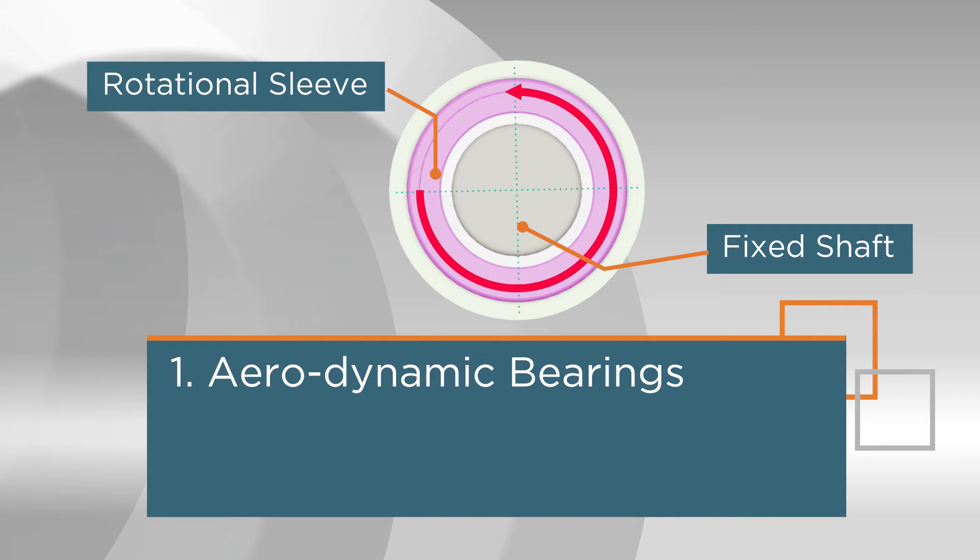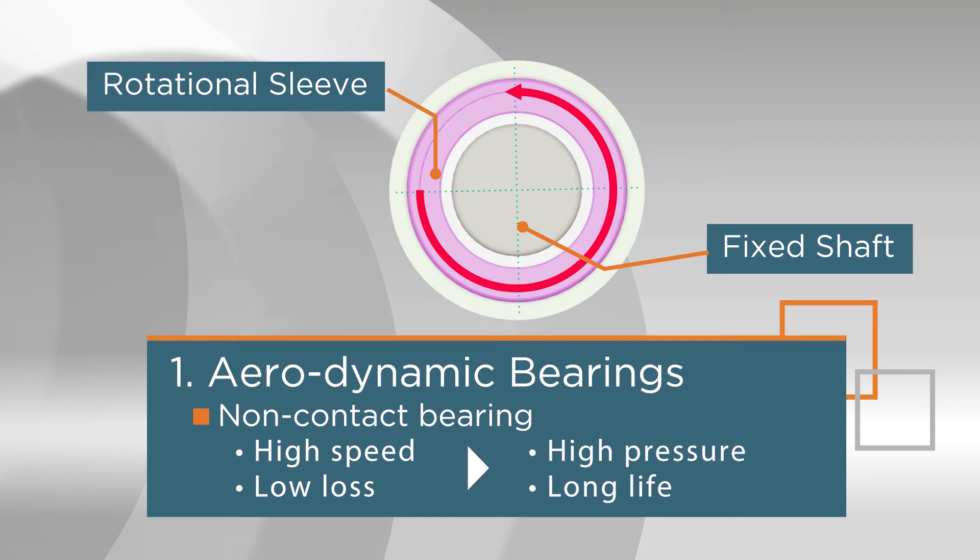As you can see in the image, because the shaft rotates at ultra-high speed without touching the sleeve by means of aerodynamic bearings, it can achieve an overwhelmingly high static pressure. And because there is no physical friction, the service life of the bearing, and consequently of the product, will be considerably longer.